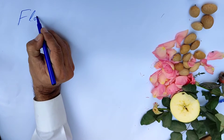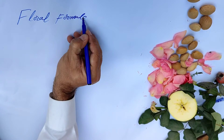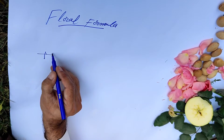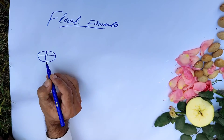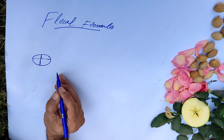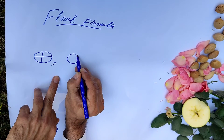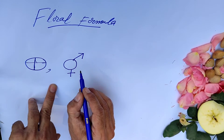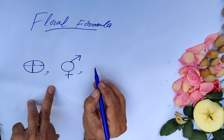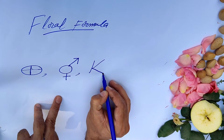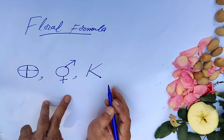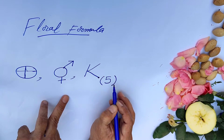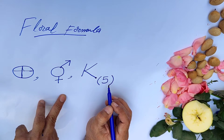Now we can write the floral formula of family Rosaceae. The floral formula represents the floral description of the flower. First, the symbol for actinomorphic — the plus and circle — represents regular symmetry. Then the circle with an arrow represents bisexuality, meaning the flower is bisexual and hermaphrodite. K represents the calyx: the sepals of family Rosaceae are five in number and united to each other, written as K(5) representing gamosepalous.